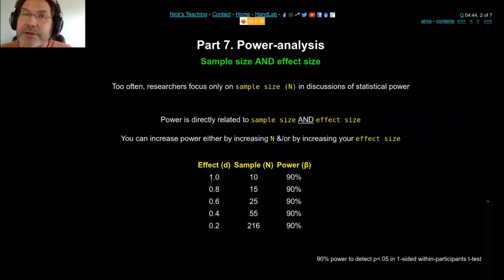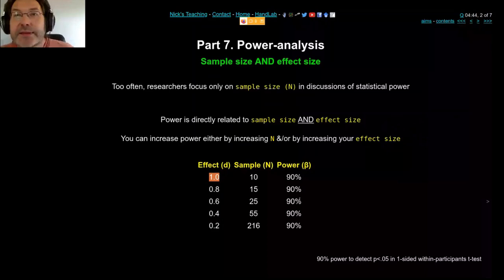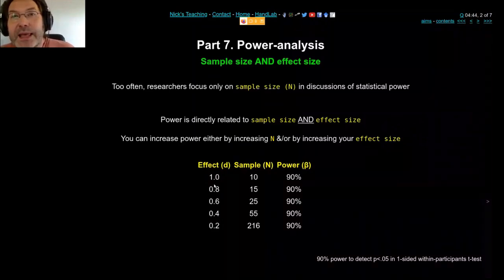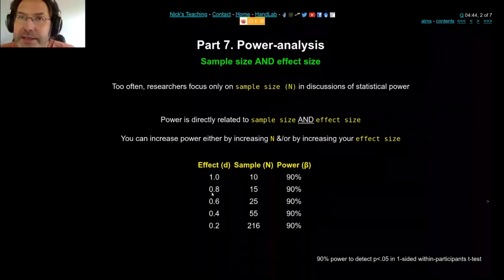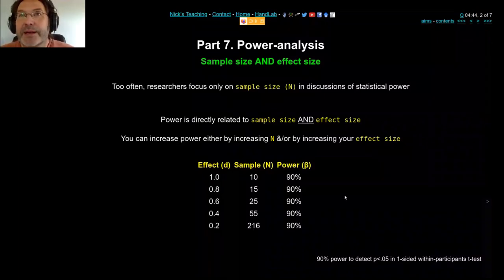And so there's obviously a square root relationship in there. When you half the power, you need four times the number of subjects. So given that relationship, do you focus your efforts on increasing your effect size or increasing your sample size? I would say the best way to get higher power is to increase your effect size, and do whatever you can to increase sample as well. But you're going to get more benefit going up this direction than you are in going up this direction.